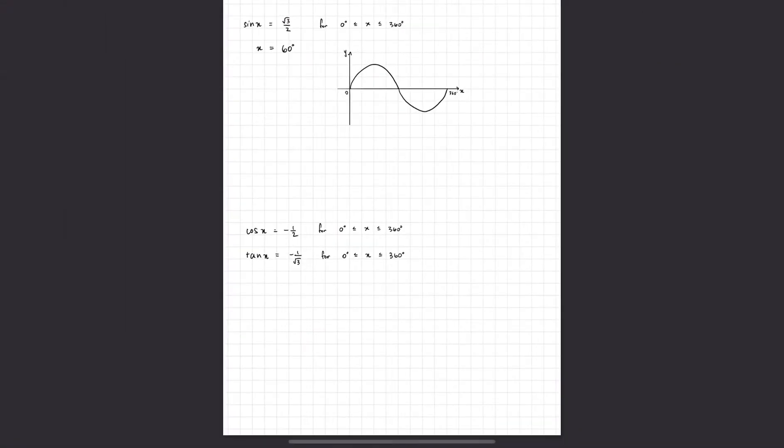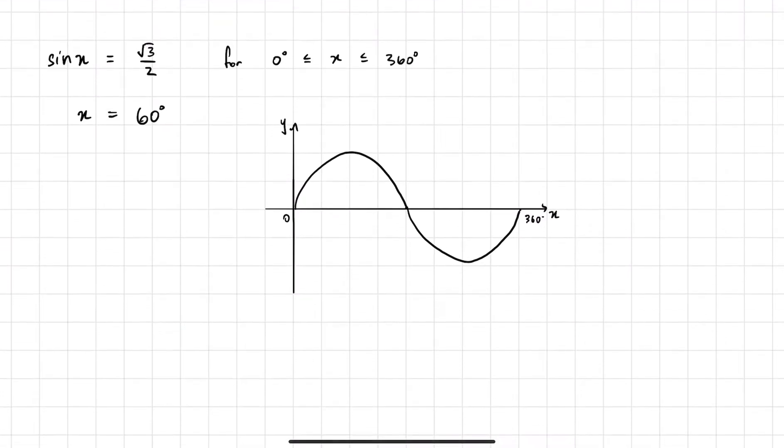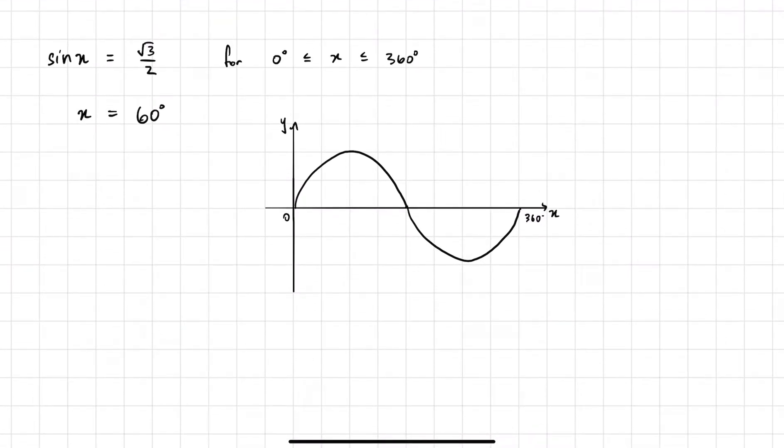I just wanted to explain or show what we're actually doing when we have an equation like this, when sine x is equal to root 3 on 2, like what are we actually solving? We're actually solving sine x, which is this graph, and we're saying when is it equal to root 3 on 2.